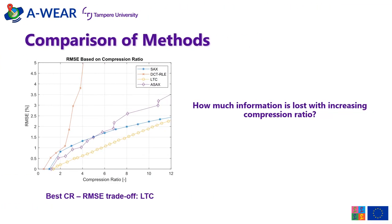In this slide, we can see a figure comparing the four methods in terms of compression ratio and error of reconstruction. The best trade-off is achieved by lightweight temporal compression across all compression ratios, while discrete cosine transform performs the worst. ASAX and SAX have similar performance. ASAX performs slightly better at compression ratios below 5, while SAX outperforms ASAX at higher compression ratios.